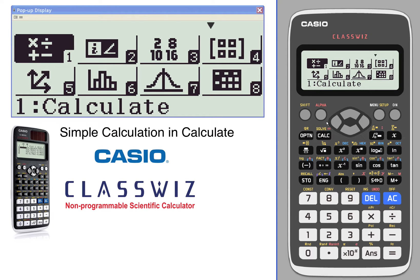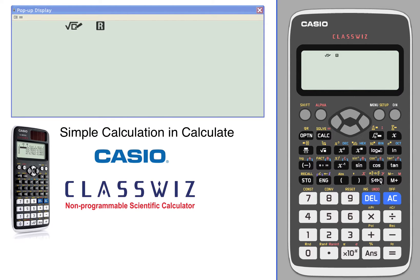Let's take a look at some simple calculations in the calculate menu. From the main menu, I'm going to select one or highlight one and press equals to enter. From here you can simply enter your calculations.